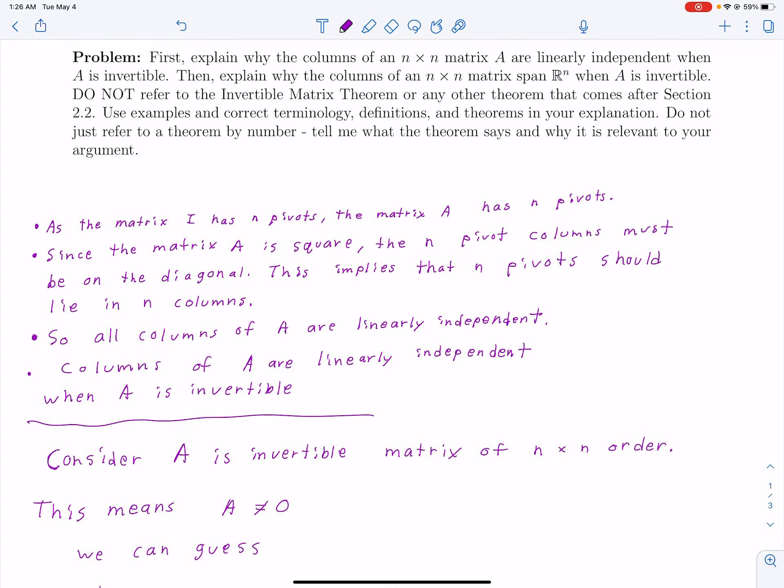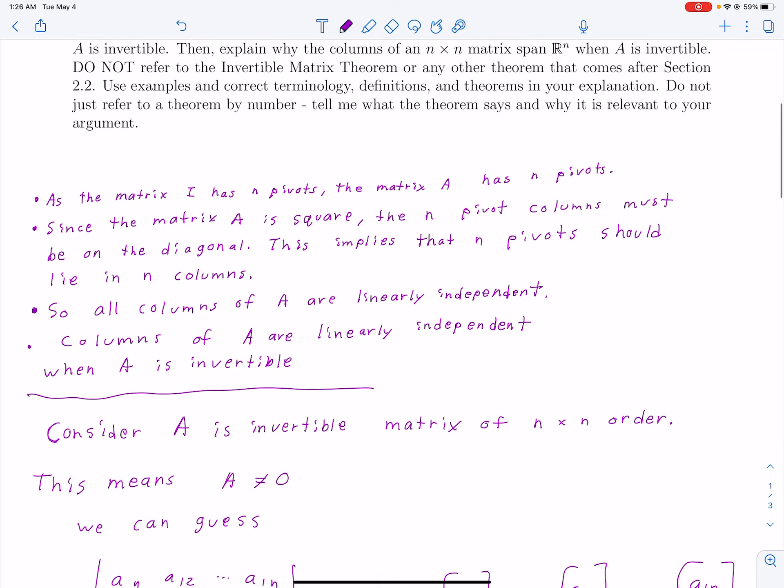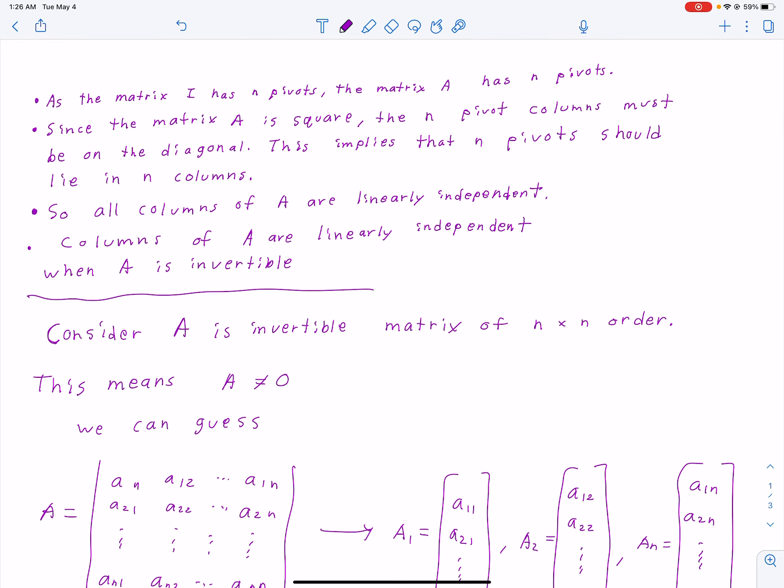We have a few things. The matrix A has n pivots, so that makes sense. Since the matrix A is square, the n pivot columns must be on the diagonal.